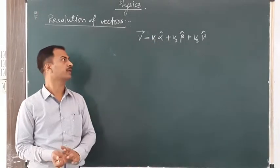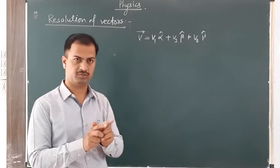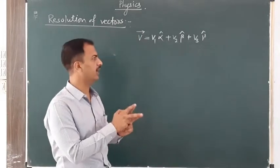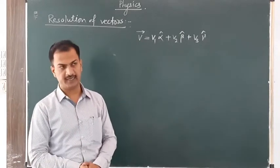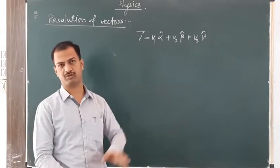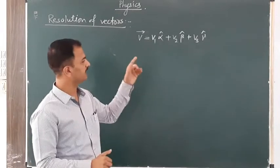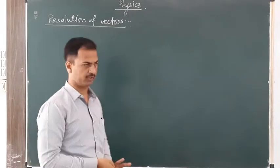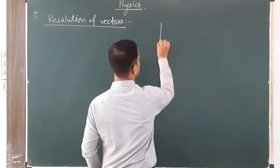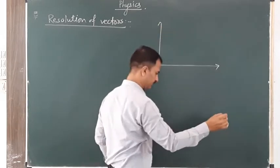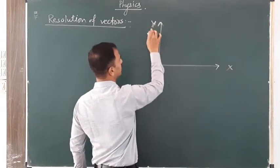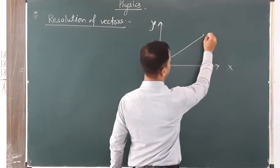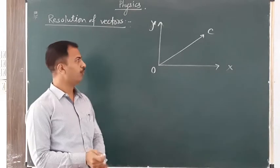You have the resolution — this vector is split into its components. You have to split the vector into different components. You have to process the resolution of the vector. When we have two dimensions of the vector, we operate in two and three dimensions. Let's take an example of two dimensions. We have the X and Y axes. We have to write this vector OC.